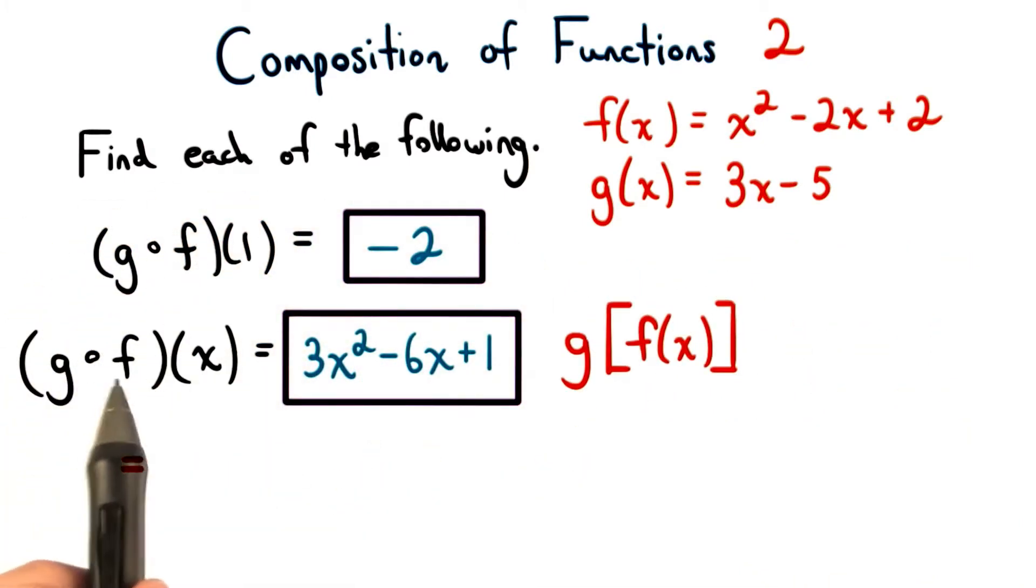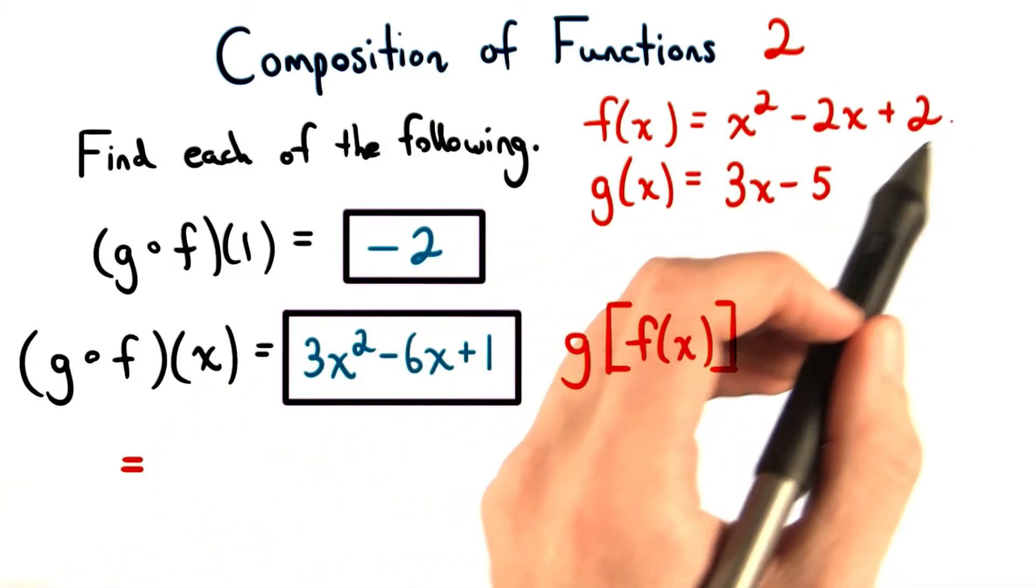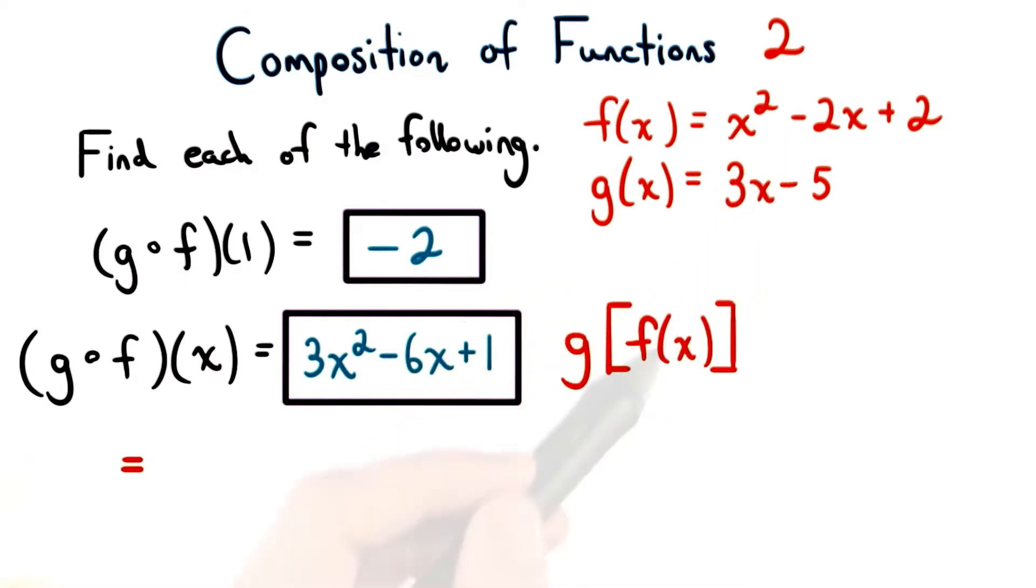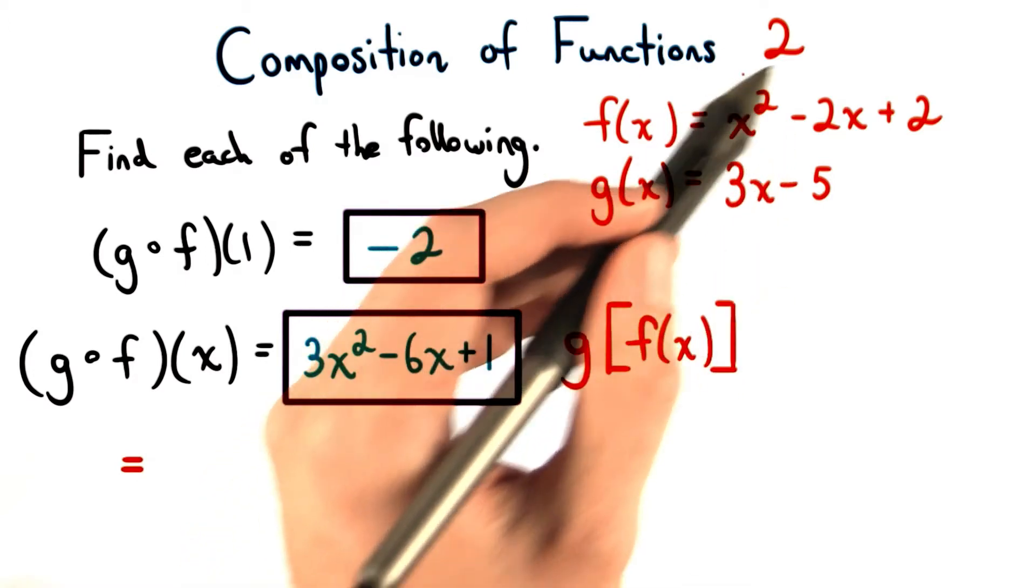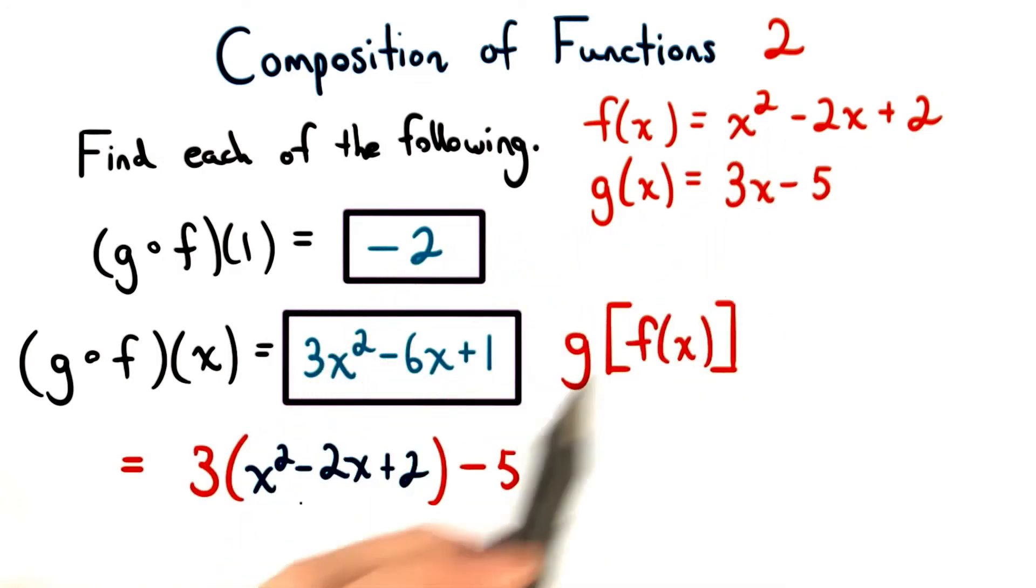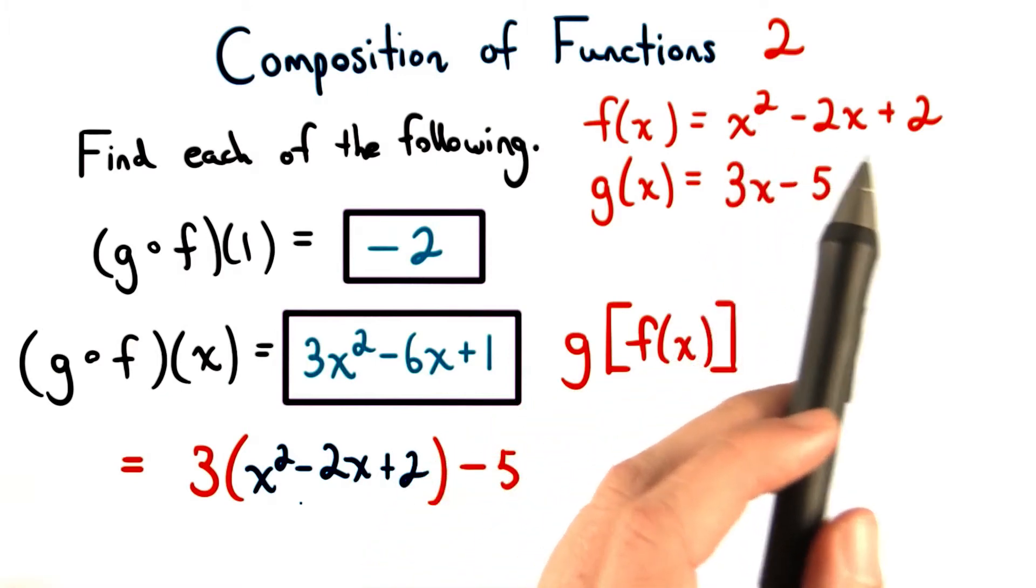Now, to find g of f of x, we're going to take f of x, this entire function, and we're going to plug it in for this x here. Remember, f of x is going to be the input for g. So, wherever we see x for g, we replace that with x squared minus 2x plus 2.